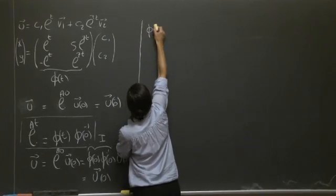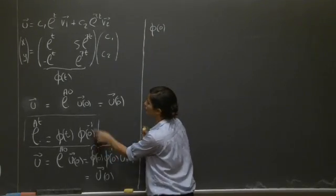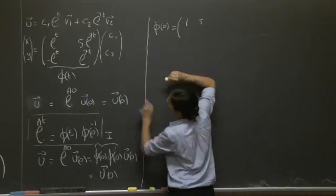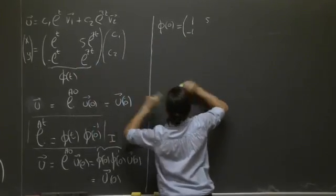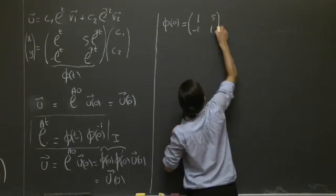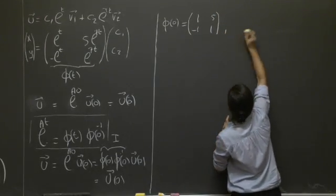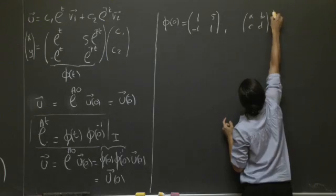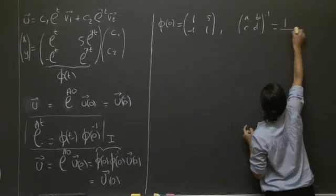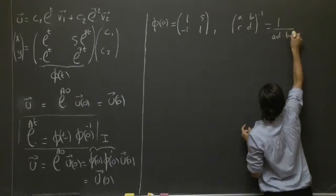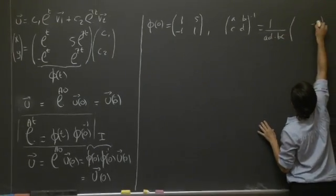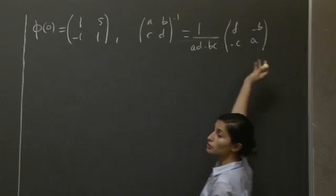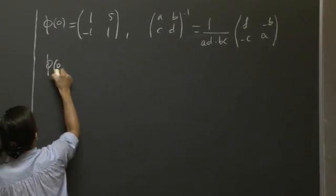Let's compute this matrix exponential. We have φ(t). From this formula, we know that we need φ(0), which gives us basically [1, 5; -1, 1]. We need to find its inverse. Recall that the inverse of a 2×2 matrix is 1 over the determinant, times the matrix with swapped diagonal entries and negated off-diagonal entries. So we can apply this to get φ(0)^(-1).